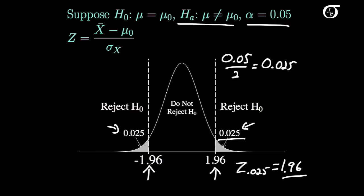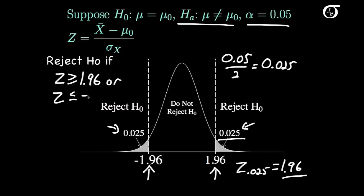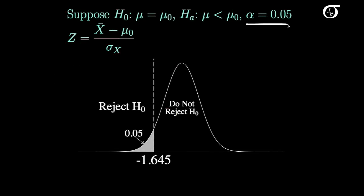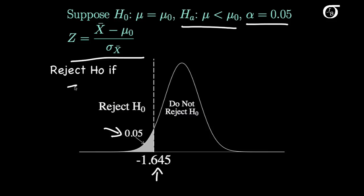This leaves us with the conclusion that we reject the null hypothesis in favor of the alternative if the Z-value we get in our sample is greater than or equal to 1.96, or less than or equal to minus 1.96. If we keep the alpha level the same but change the alternative hypothesis to mu being less than mu0, values in the left tail give evidence against the null. So we put the entire alpha level in the left tail, and the Z-value giving an area of 0.05 to the left is minus 1.645. We reject the null if Z is less than or equal to minus 1.645.